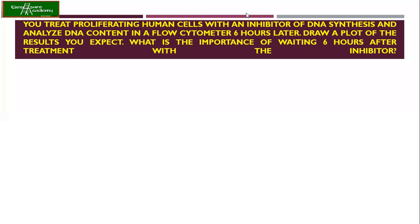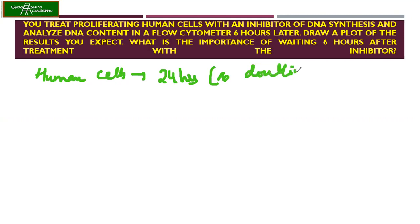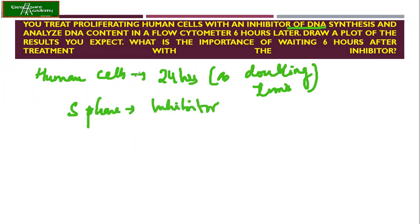The first question: if you treat proliferating human cells with an inhibitor of DNA synthesis and analyze the DNA content in a flow cytometer six hours later — what do you expect? You need to know that for human cells, if the average generation time is not mentioned, you take 24 hours as the doubling time. They have added the inhibitor of DNA synthesis, so S phase is blocked. After six hours, they analyze the DNA content using the FACS. Draw a plot of the results you expect.